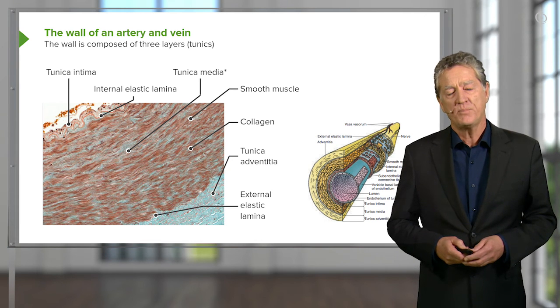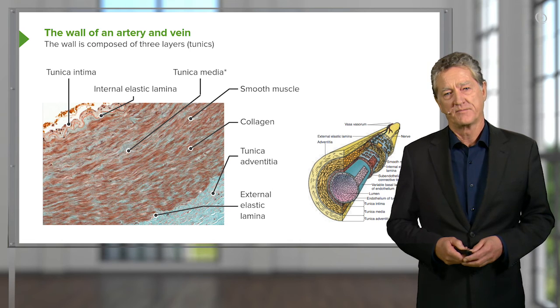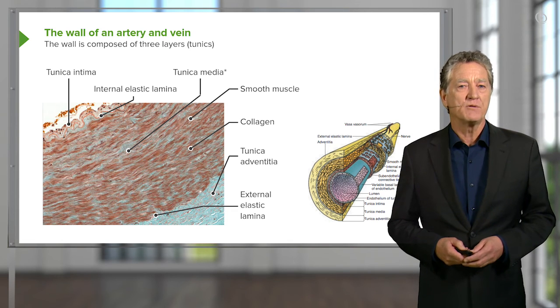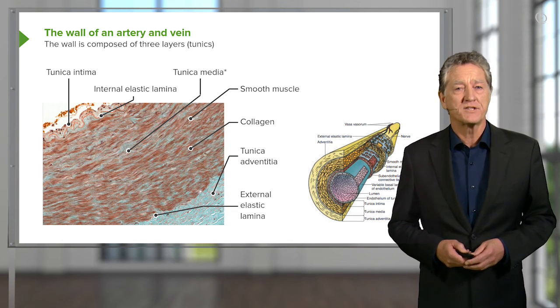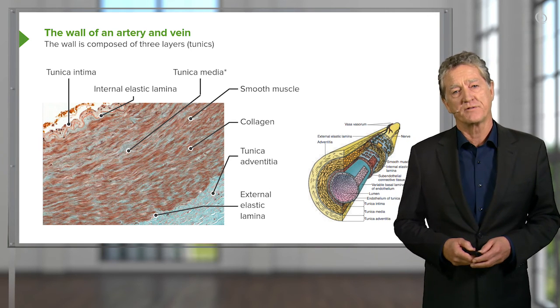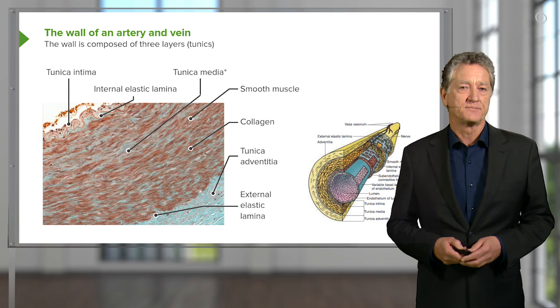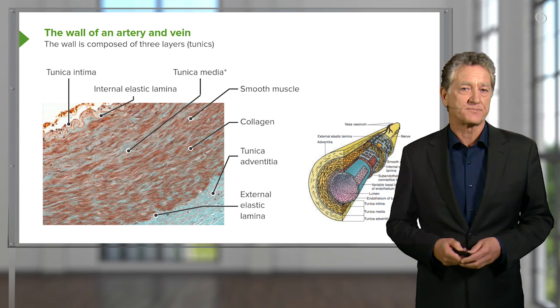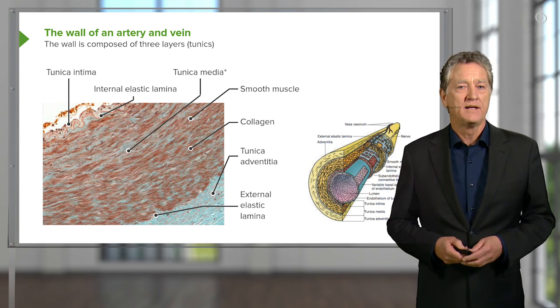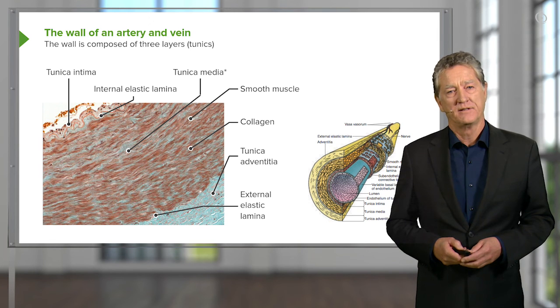One important point to understand is that some of you may recall or remember from your previous studies of connective tissue for instance that fibroblasts lay down collagen and elastic tissue. Well, in the case of an artery and a vein, those connective tissue components, collagen and elastic tissue, is actually made by the smooth muscle cell.